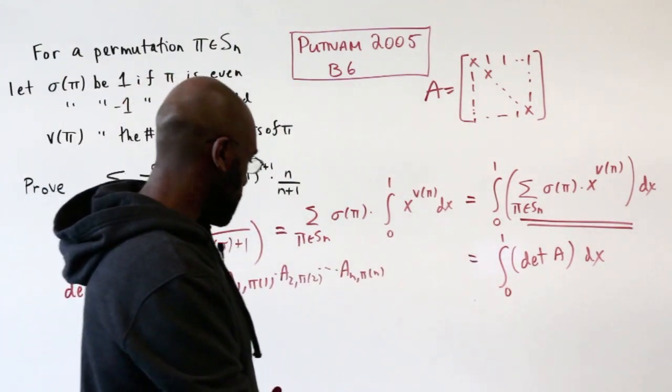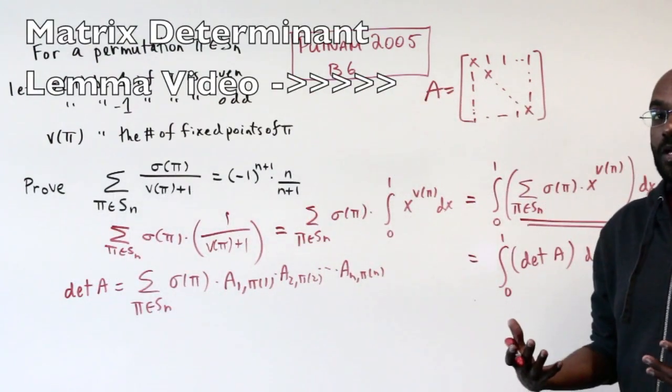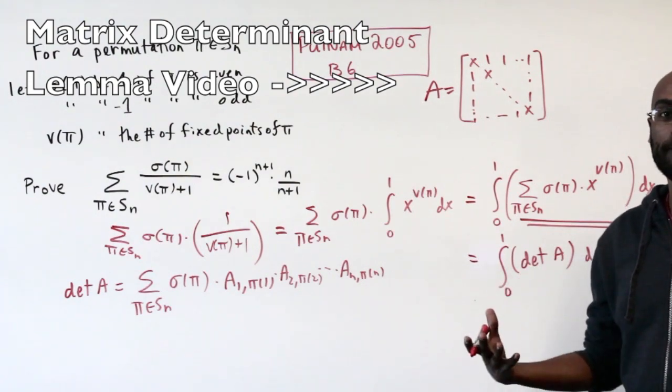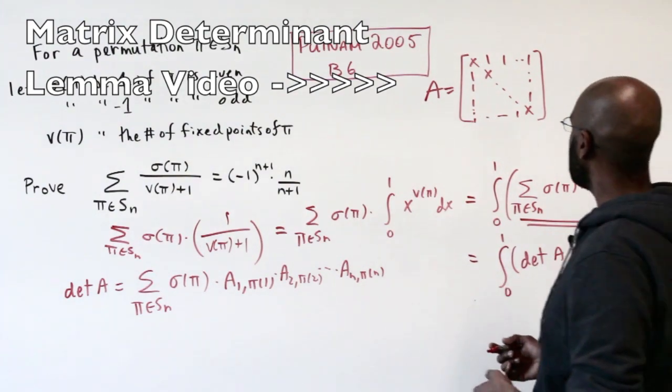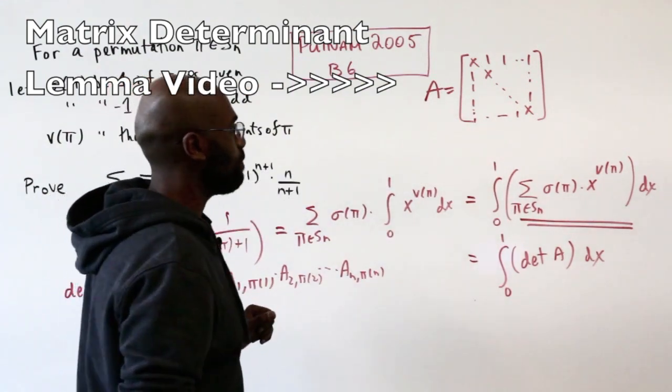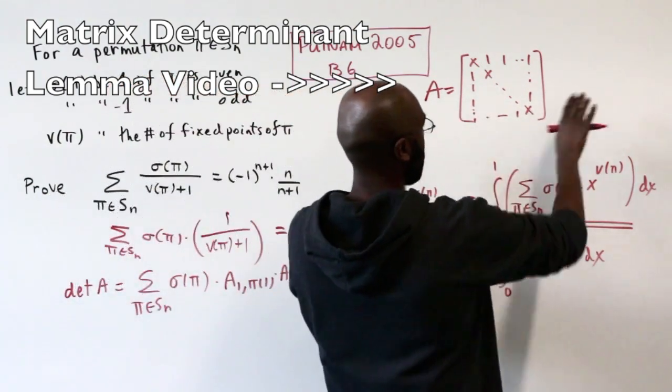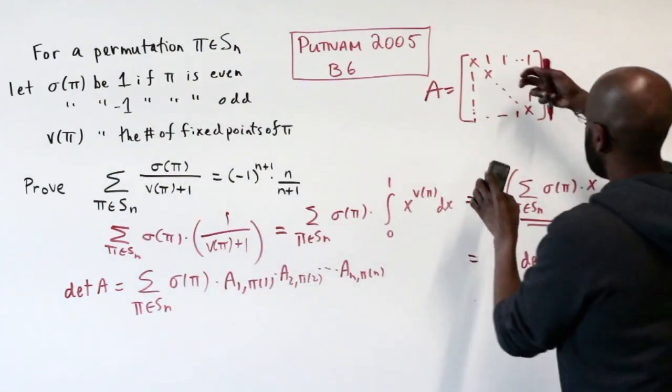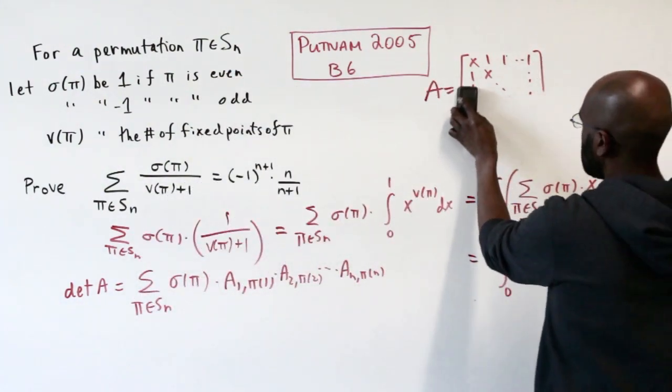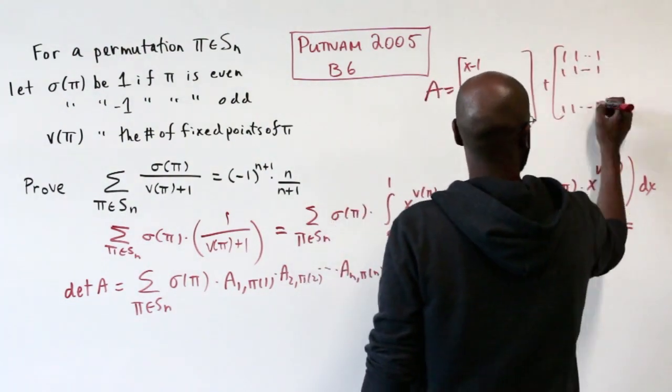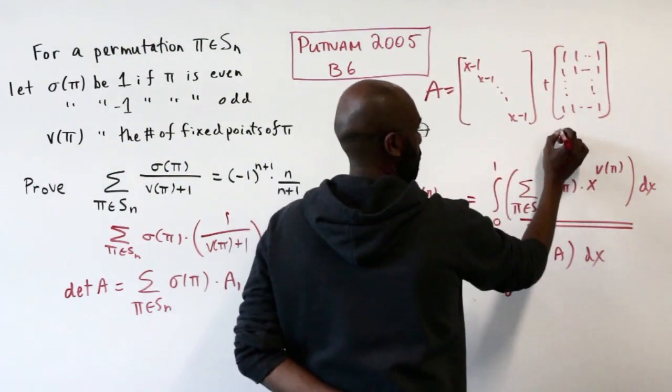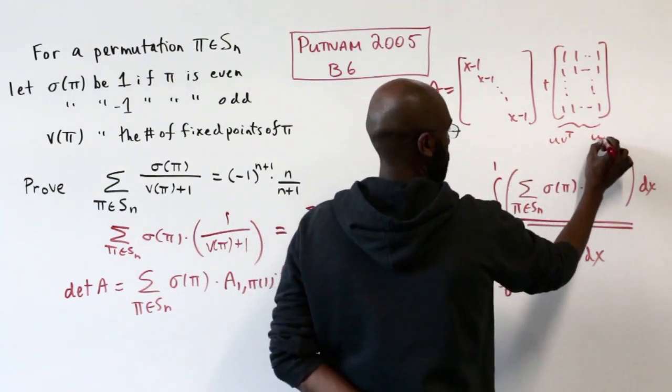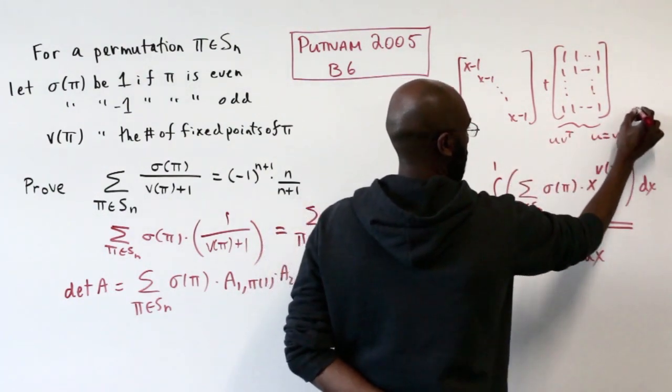Now we're left with figuring out what this determinant is. Lucky for us, we have some help from a previous video on this channel, the matrix determinant lemma. That video gives us a hint about how to compute this by peeling off a rank 1 matrix. We can rewrite this matrix by peeling off the all ones matrix, which I can write as uv^T, where u and v are both the all ones vector.